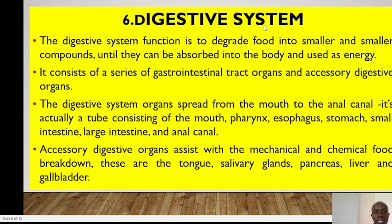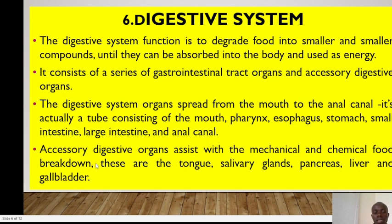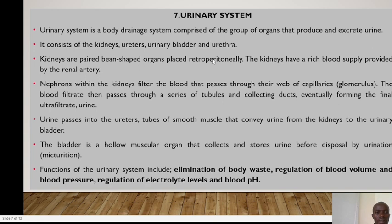The digestive system works to degrade food into smaller and smaller compounds until they are able to be absorbed and used as energy. It consists of the gastrointestinal tract organs and accessory digestive organs. The accessory digestive organs help in mechanical and chemical food breakdown and include the tongue, salivary glands, pancreas, liver and the gallbladder.